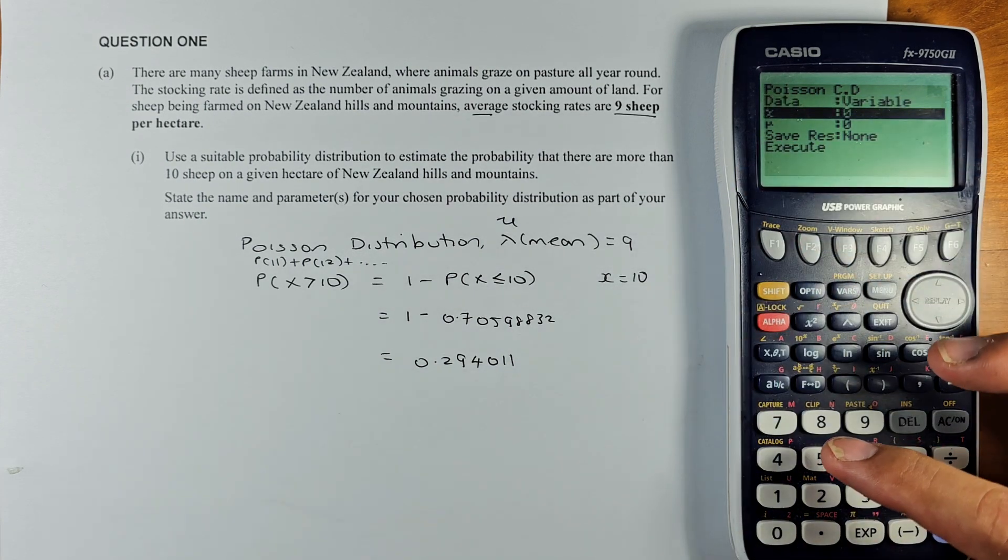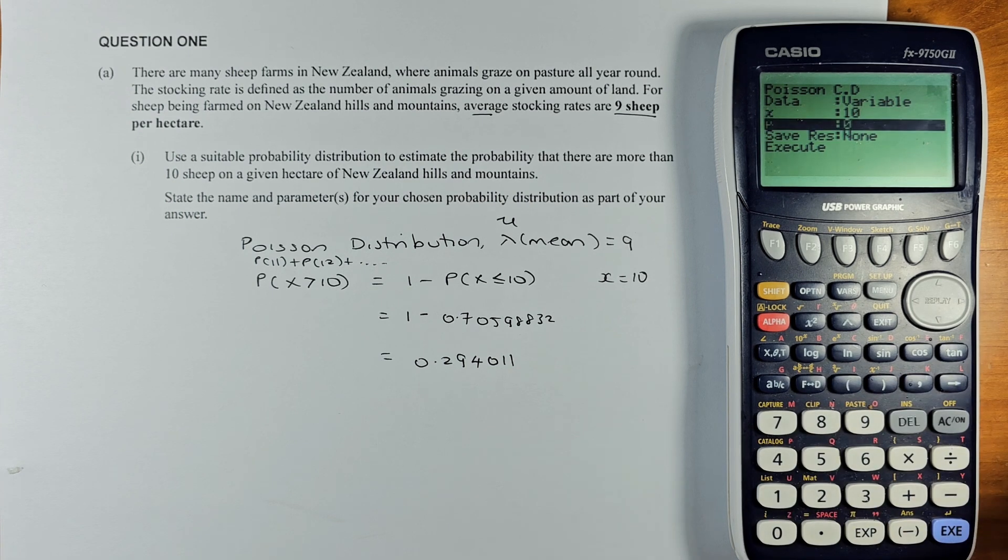Your x is 10, so key in 10, okay, execute. And then your nu or your lambda, your mean is going to be 9. Press 9 and execute.